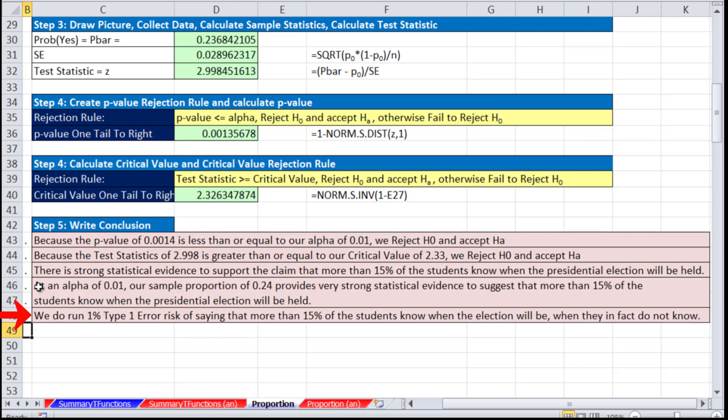Finally, we do run a 1% Type 1 error risk of saying that more than 15% of the students know when the election will be, when in fact they do not. Once you get a P-value like this, this is very strong evidence. That's hypothesis testing for a proportion. We've done a lot in Chapter 9. We'll see you next video.